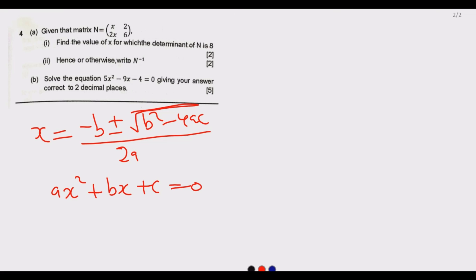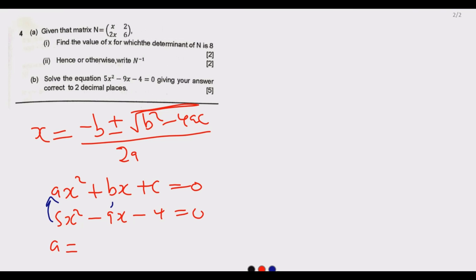In this case we have 5x² minus 9x minus 4 equals 0. Identifying the coefficients: a equals 5, b equals negative 9 — you take the entire term including the sign — and c equals negative 4, also including the sign. Once you identify these, it's much easier to substitute.